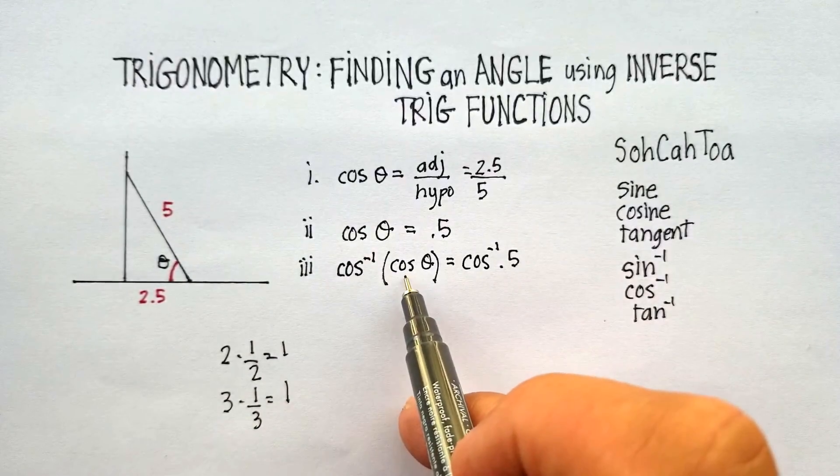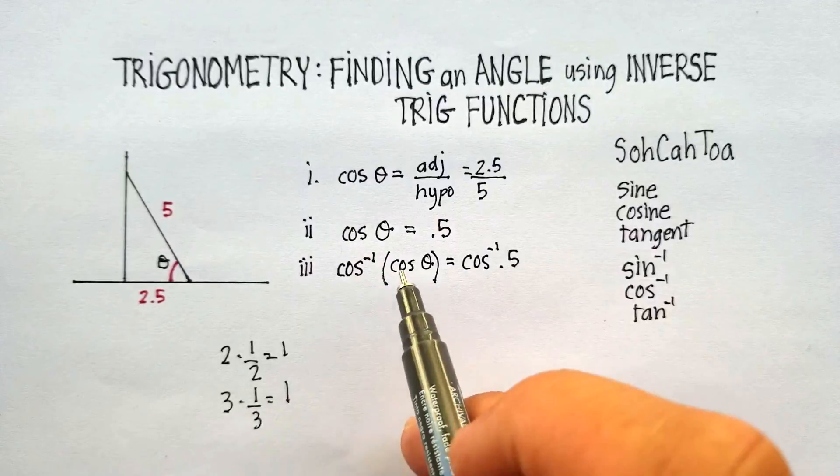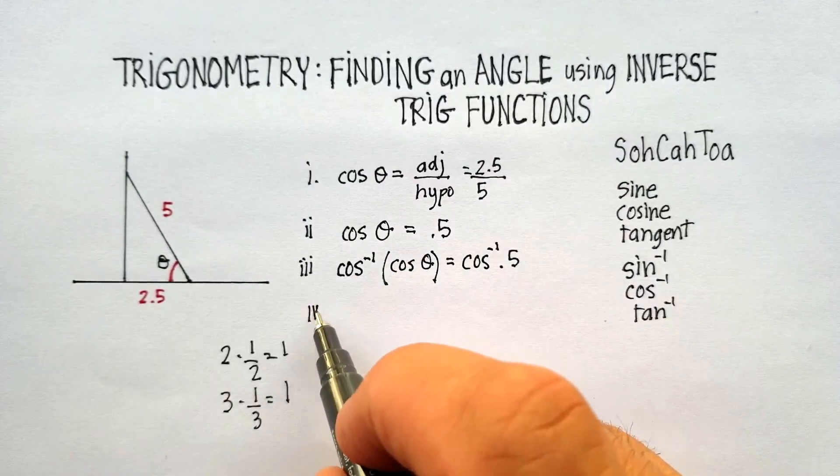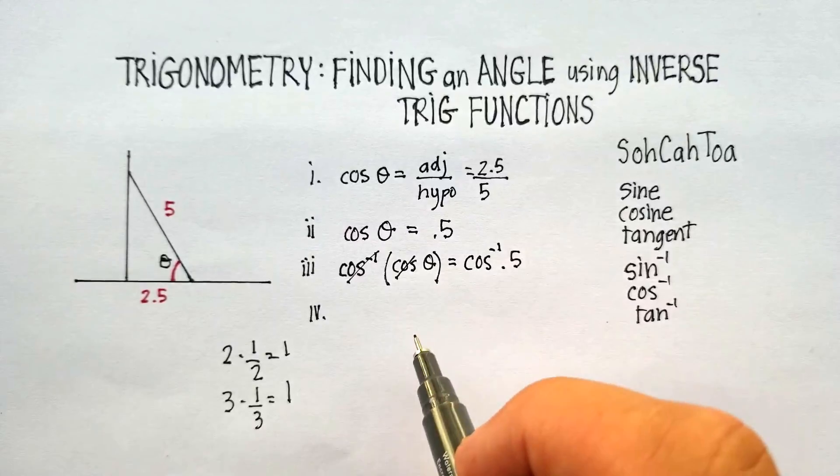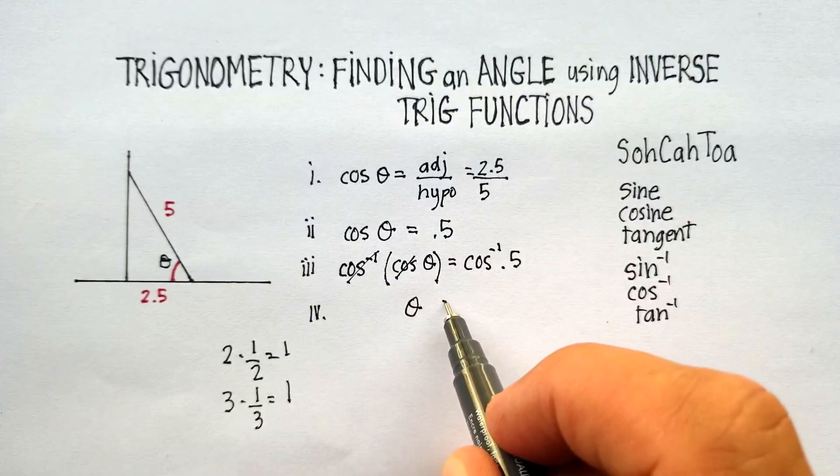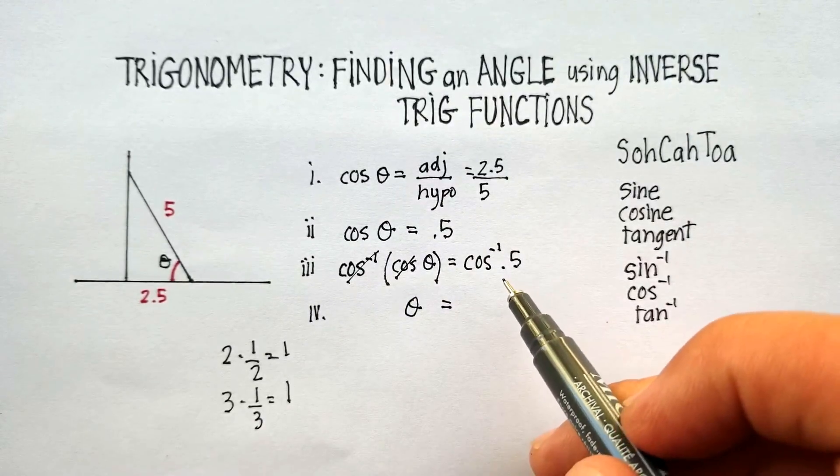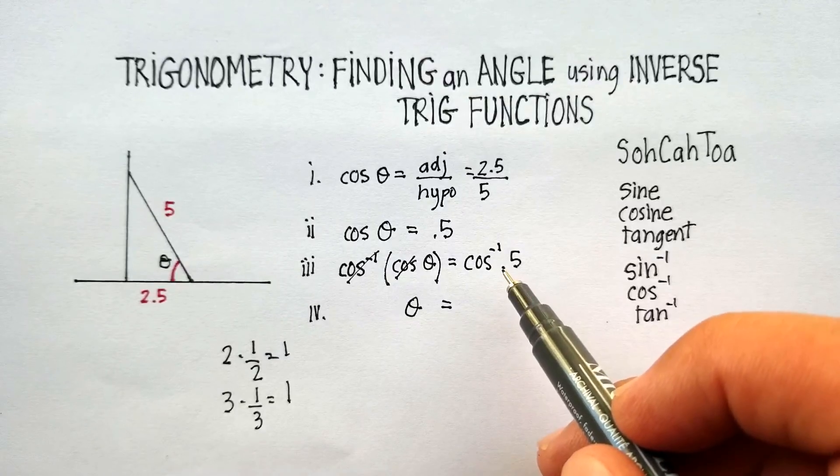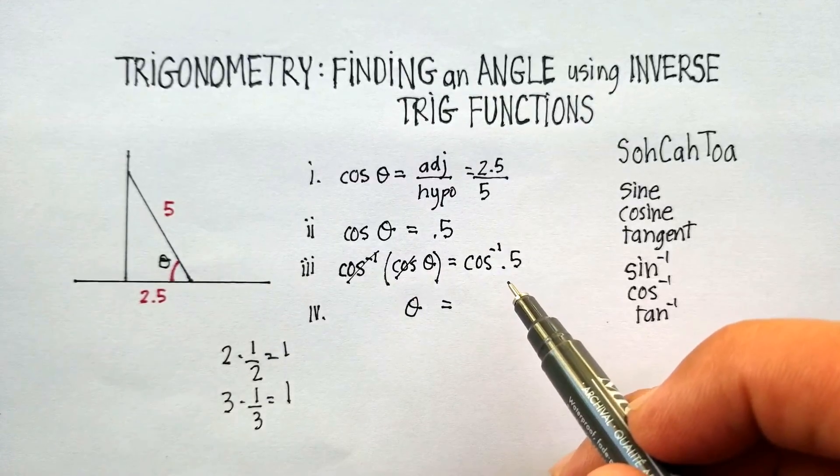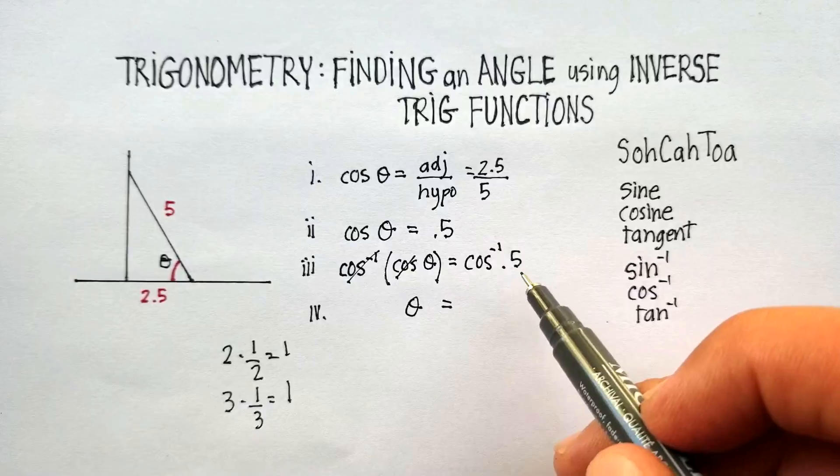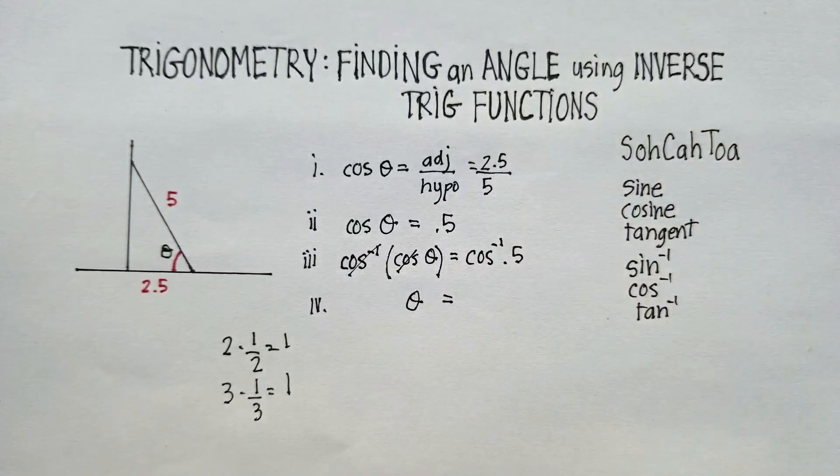Same thing with cosine and inverse cosine. When you multiply these two, they cancel out to be equal to 1. And you're just left with the angle that you're looking for. And what you do is you go to your calculator and put in inverse cosine of 0.5. Now, let me show you how to do that.